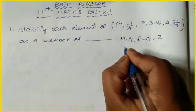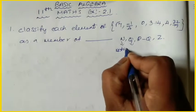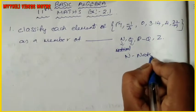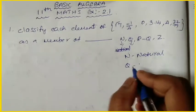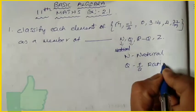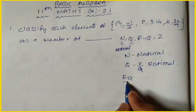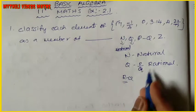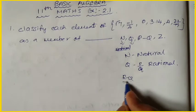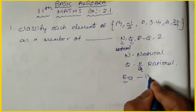Here we have to say N is the natural number, and Q is the rational number. R minus Q — R is the real number and Q is the rational number — so real numbers contain rational numbers and irrational numbers. R minus Q is the irrational number.